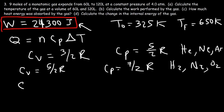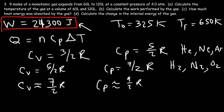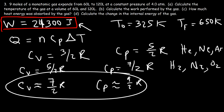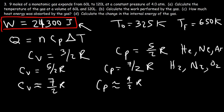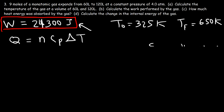For molecules with three atoms, Cv is approximately (7/2)R and Cp is approximately (9/2)R. The deviations become fairly significant once you deal with gas molecules with three or more atoms. For this problem, since we have a monatomic gas, we use Cp = (5/2)R.